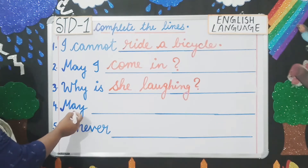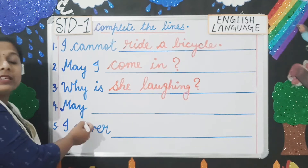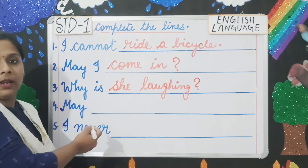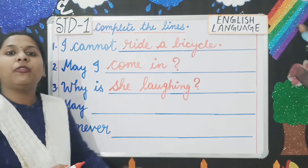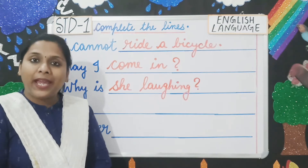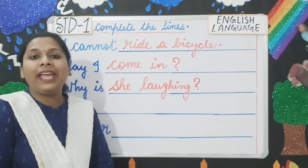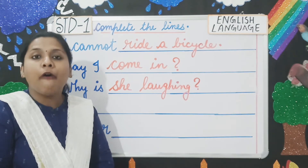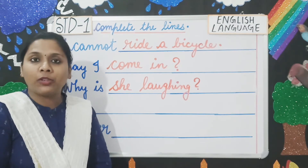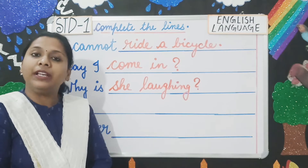Next prompt is 'May' — but this 'May' is the month. So what can you write about May? You can write: 'May is the fifth month of the year.'